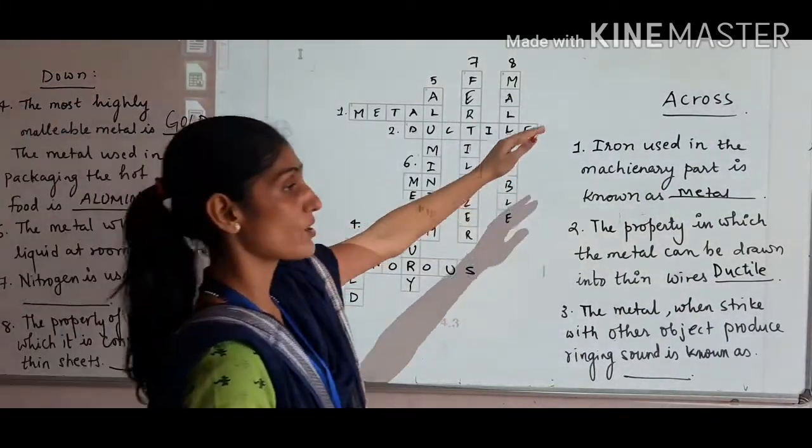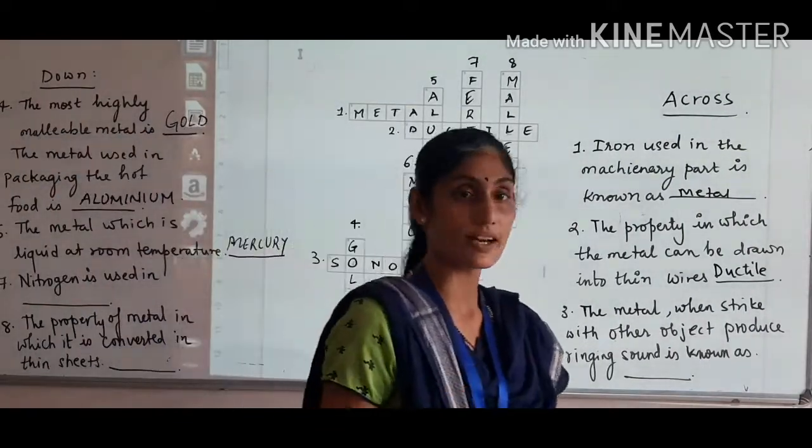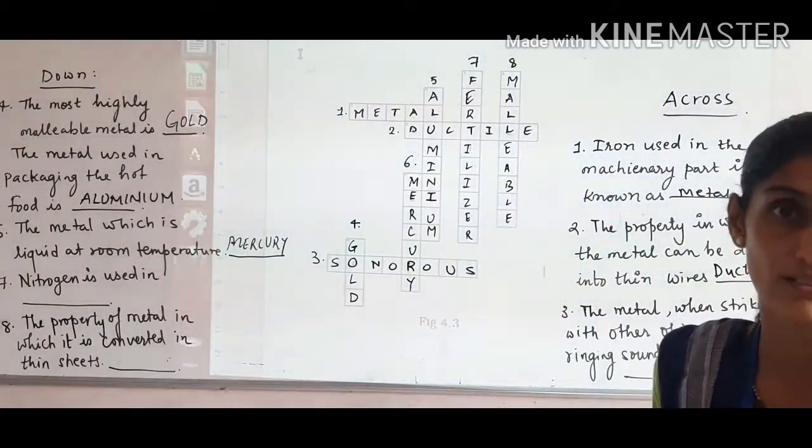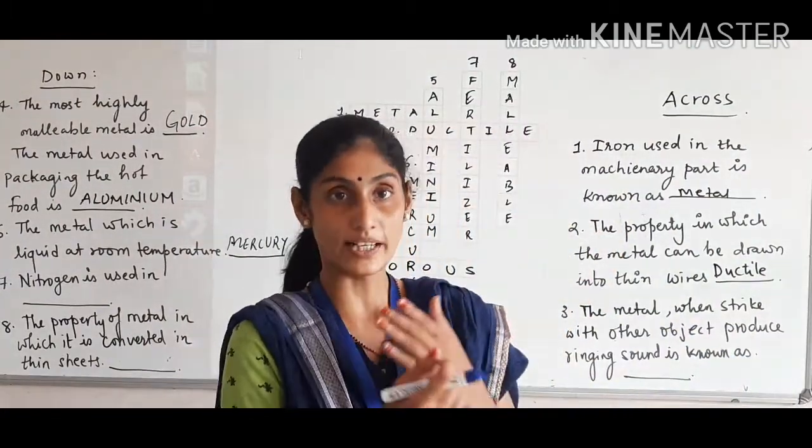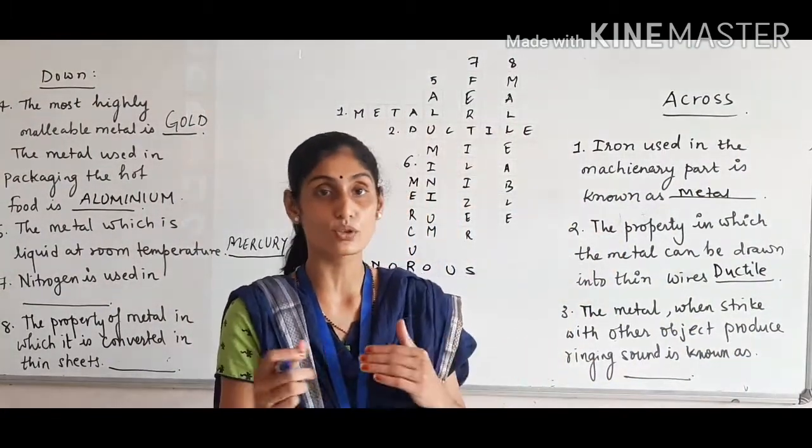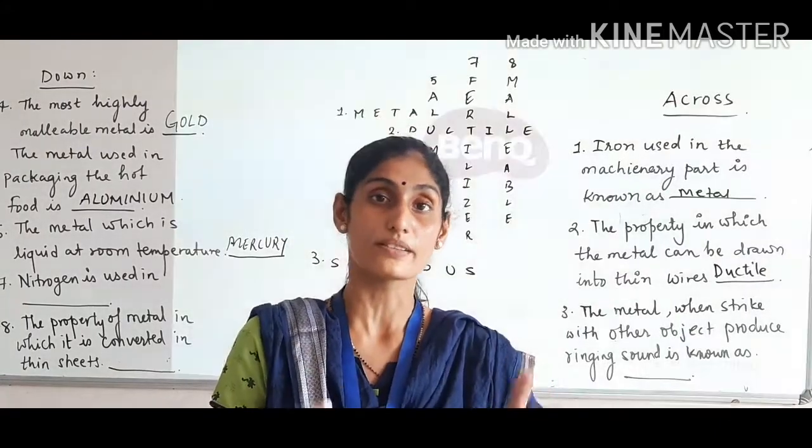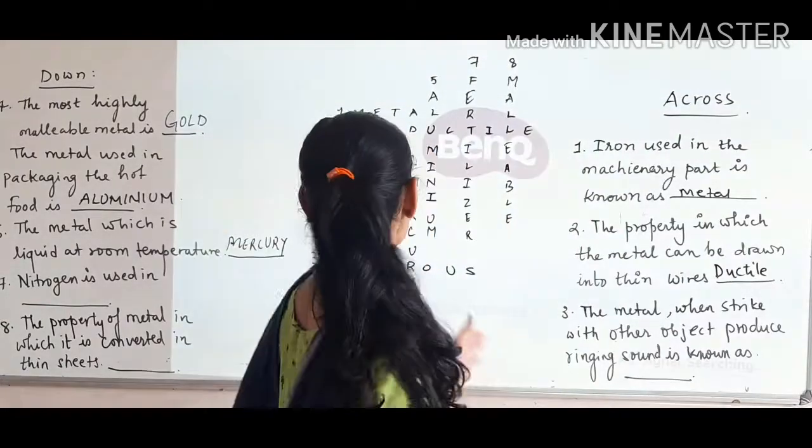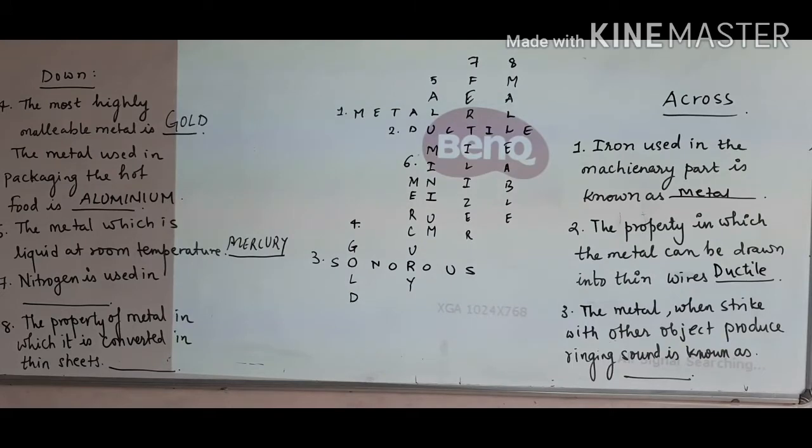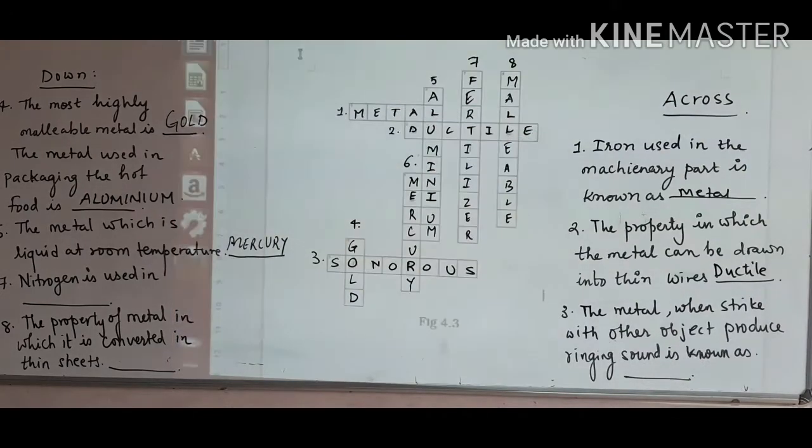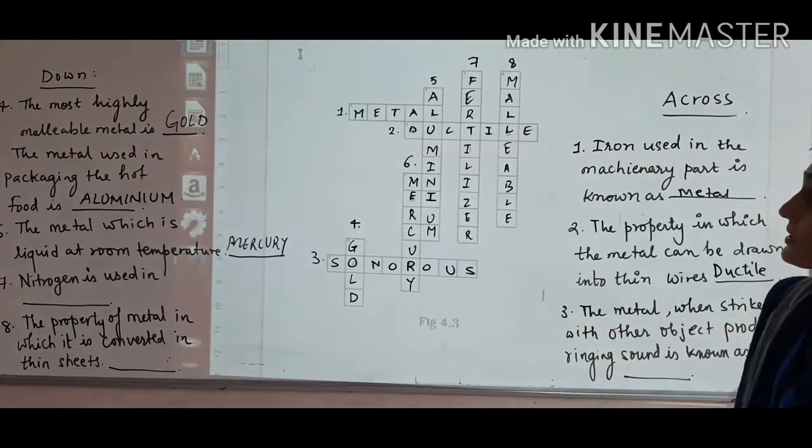So here we have the idea of how to write the crossword puzzle. First, we have to see the across part, then we have to make the down part. In your exam, you will know any one answer or two or three answers. Try to sort it out. Don't leave the question blank even if you don't know one or two. Try to at least write the answers you know.